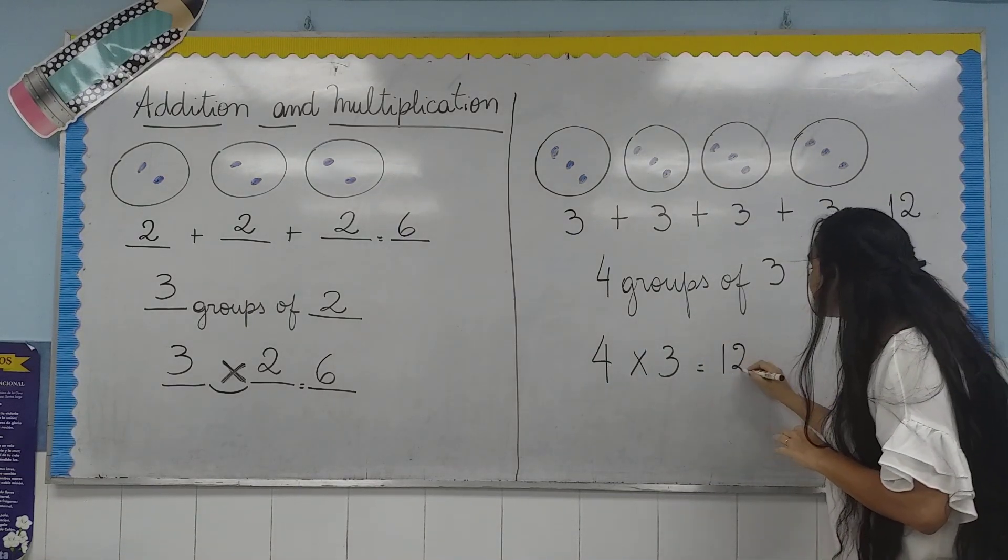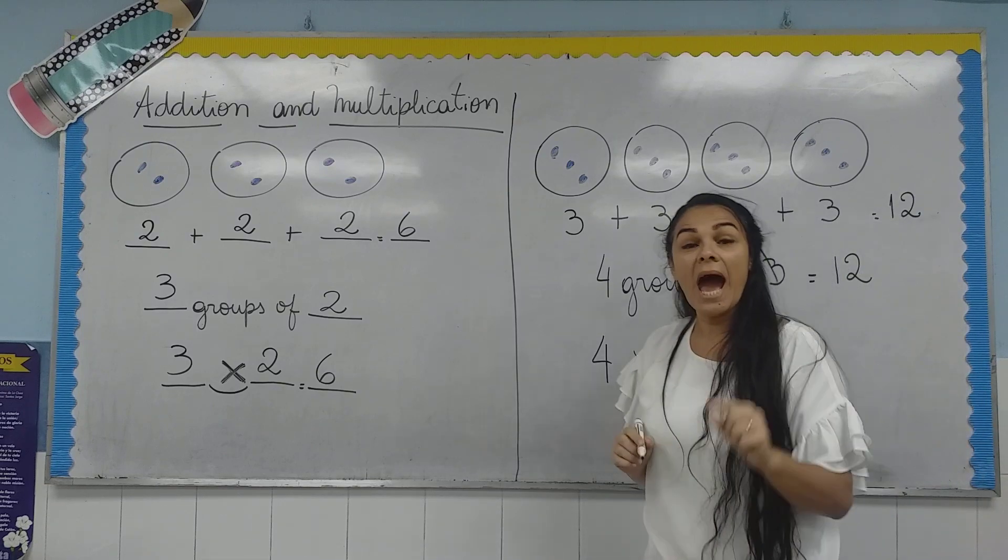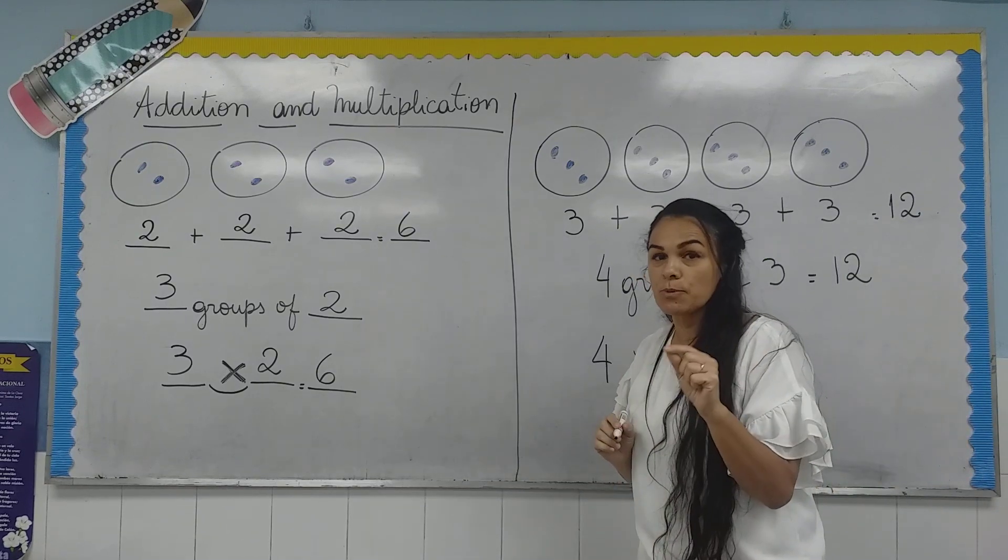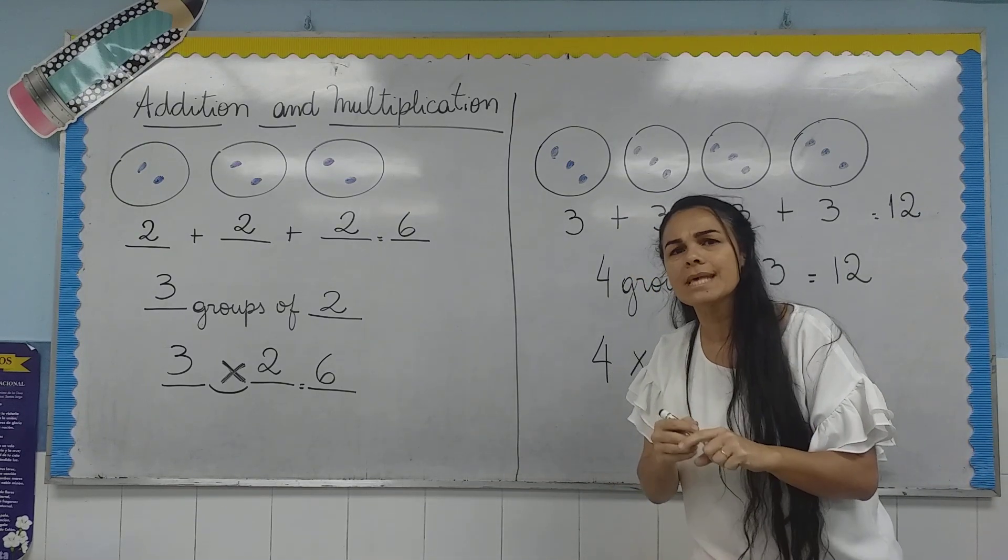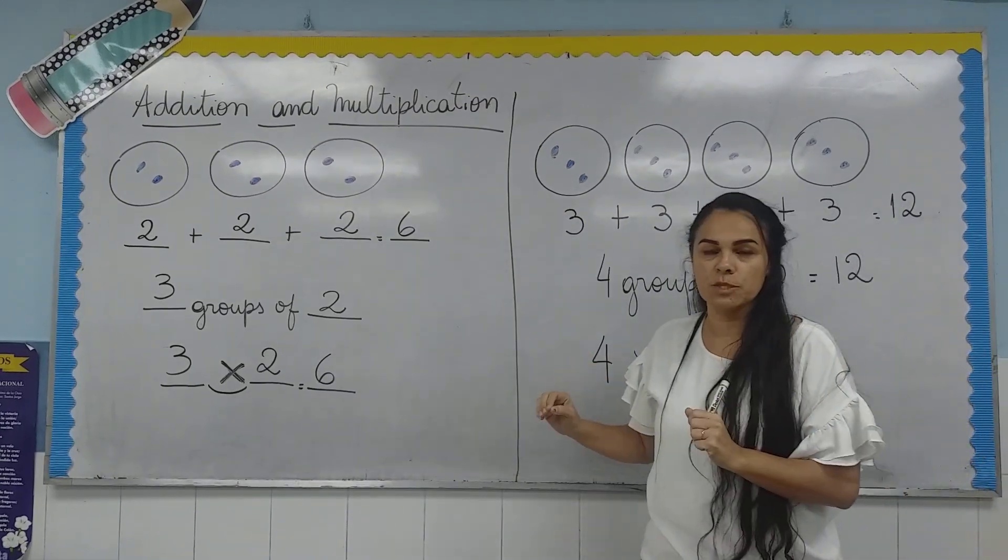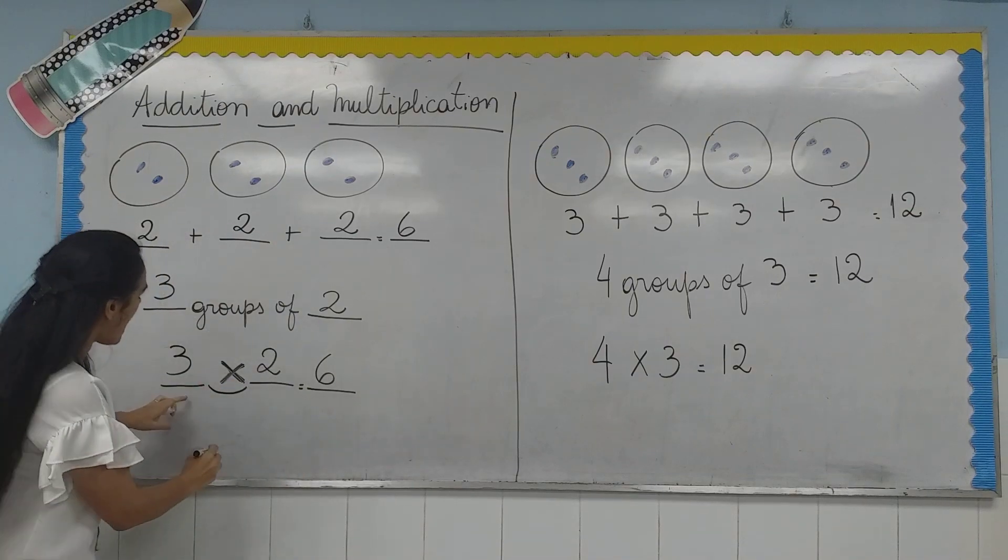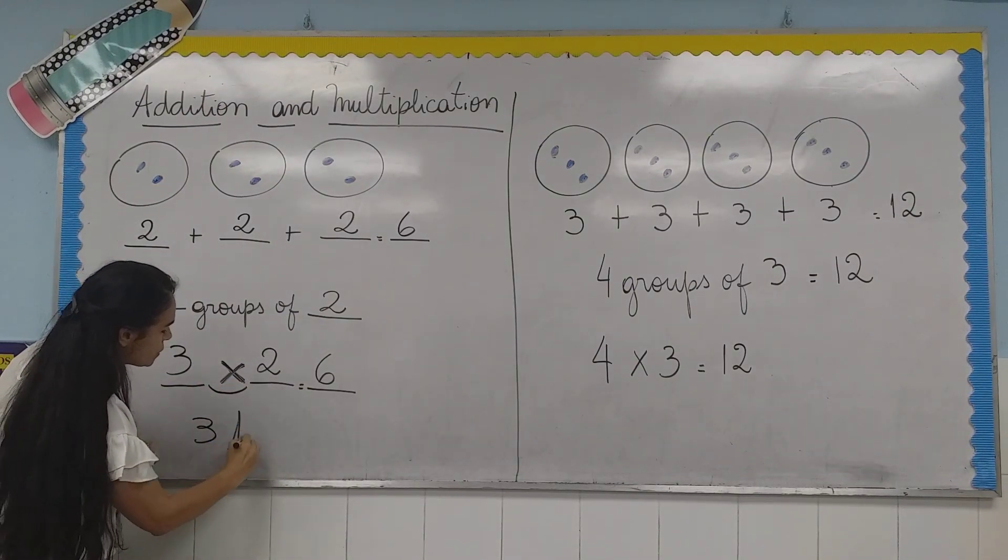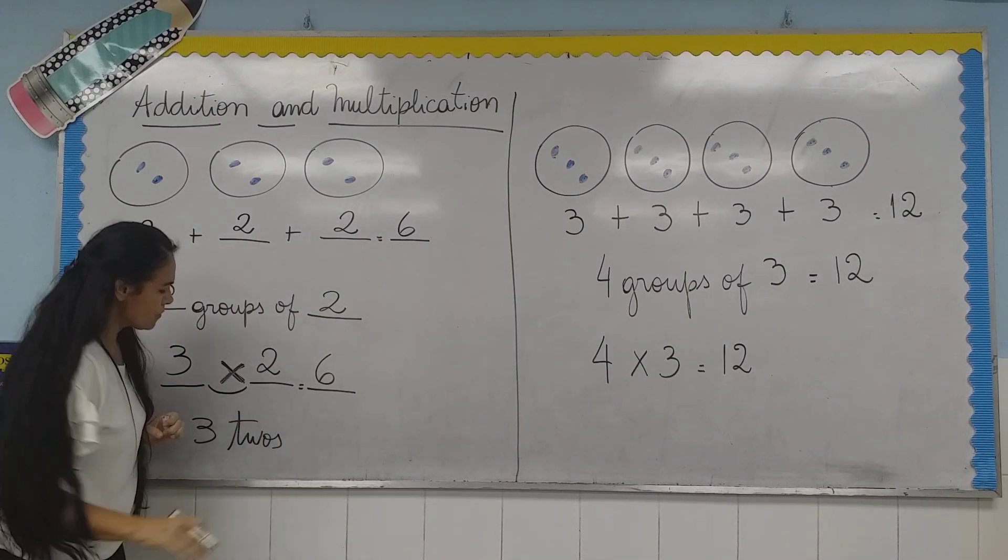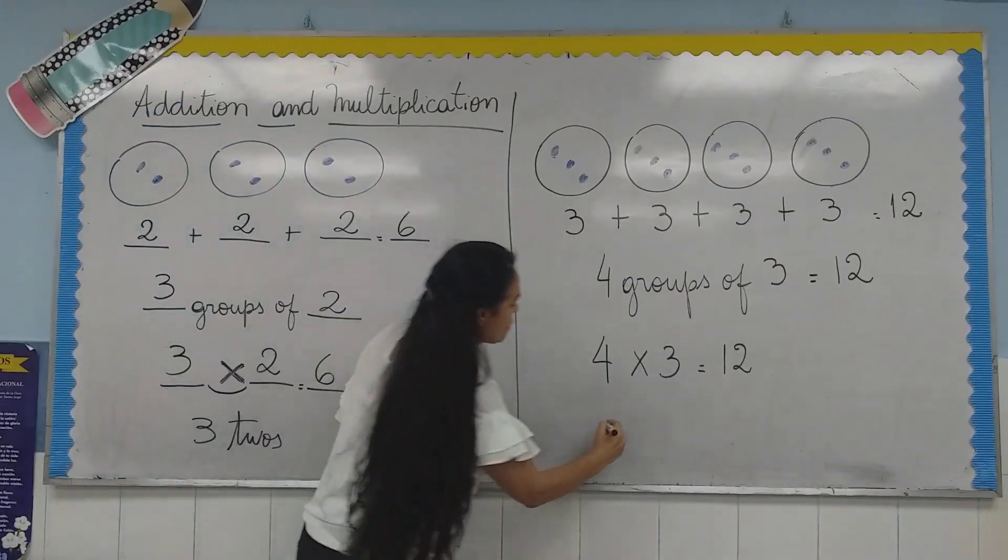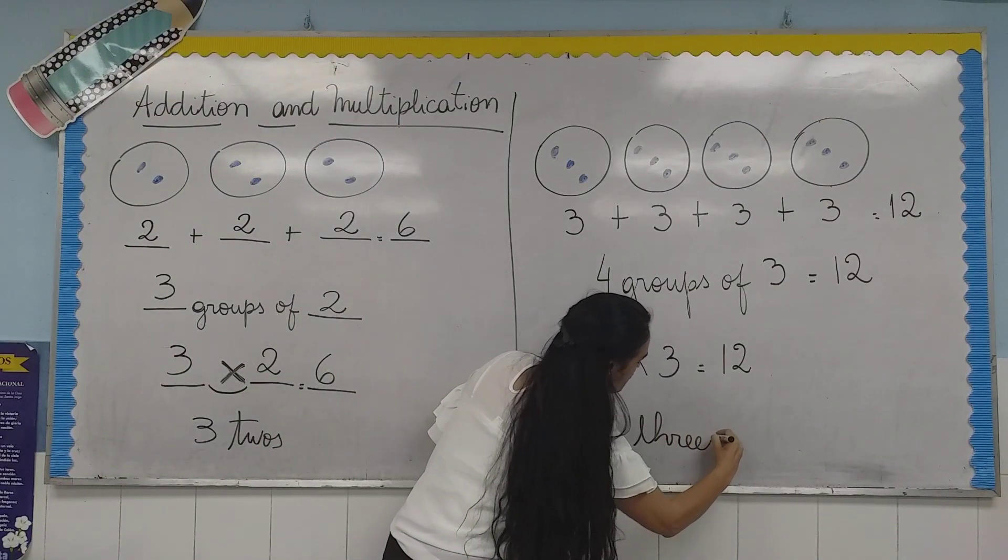This is what multiplication is about. And you will see in your textbook and workbook many examples of this. Also, you can express the multiplication sentence like this. You have three twos or you have four threes. Okay?